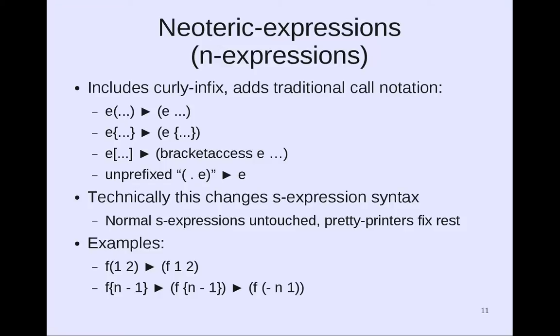Neoteric expressions start with Curly Infix and then add a more traditional function call notation as an abbreviation. So e(material inside) is an abbreviation for (e material inside). e{material inside} is an abbreviation for (e curly-infix-expression), abbreviating a common and useful case. e[material inside] is an abbreviation for (bracket-access e ...), and an unprefixed (. e) is simply e — this is a useful escape mechanism. Technically this does change S-expression syntax, but normal S-expressions are untouched, and pretty printers can trivially fix the few that remain.